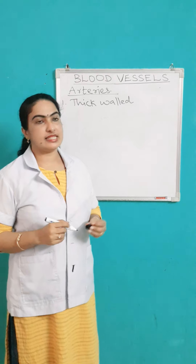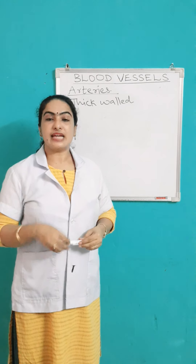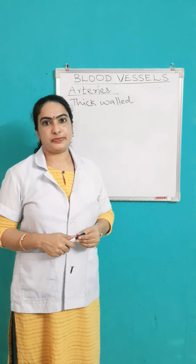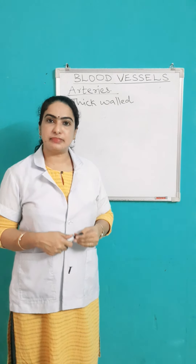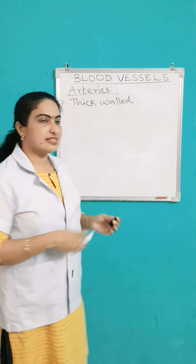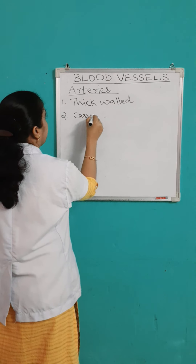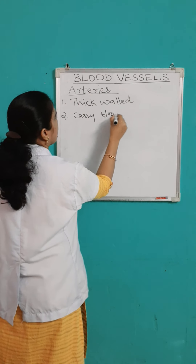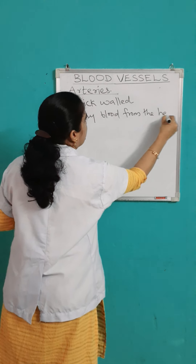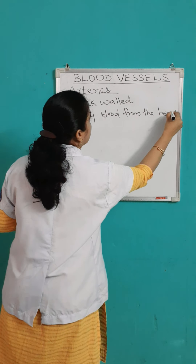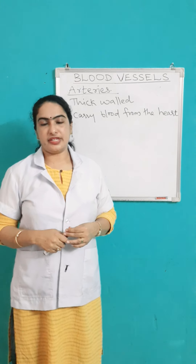The second point is these arteries always carry blood away from the heart. That means from the heart, the arteries carry blood to all parts of the body. It carries blood from the heart to different parts of the body — that is the second point.